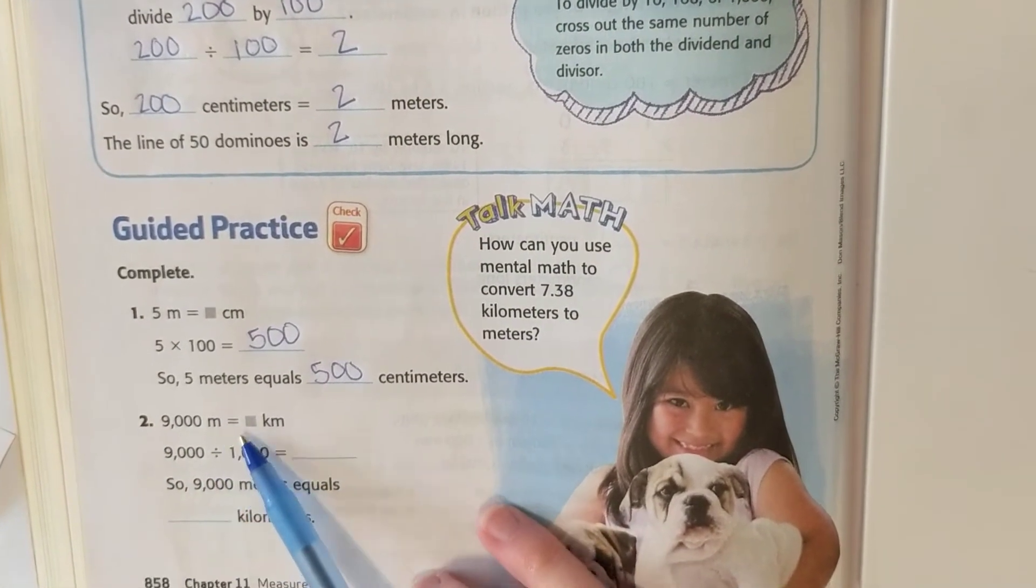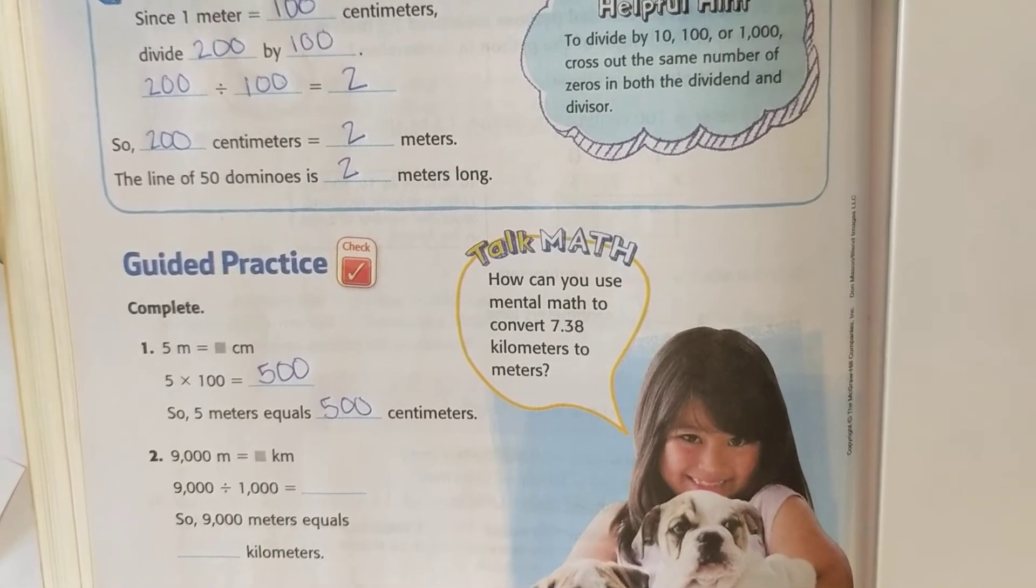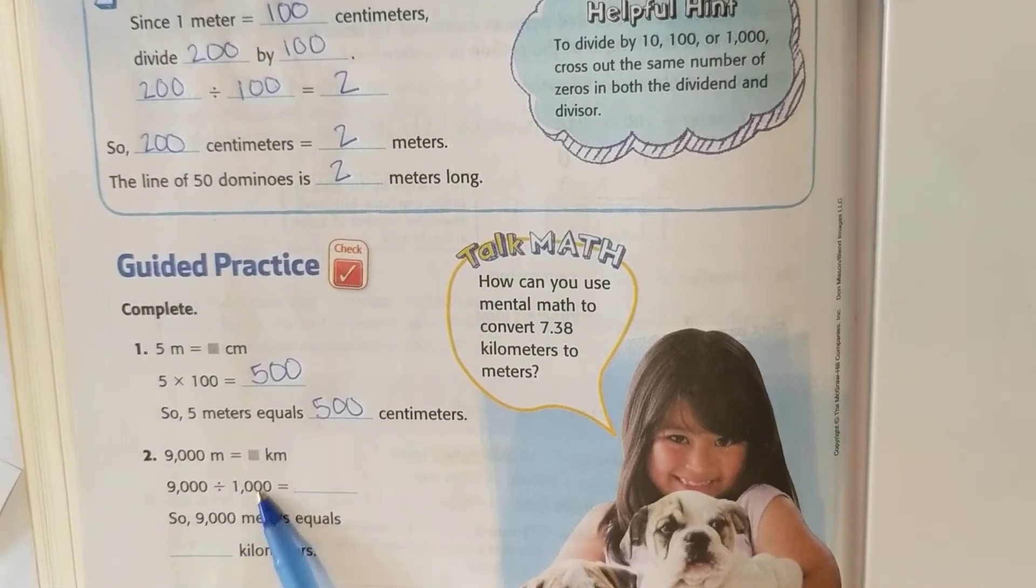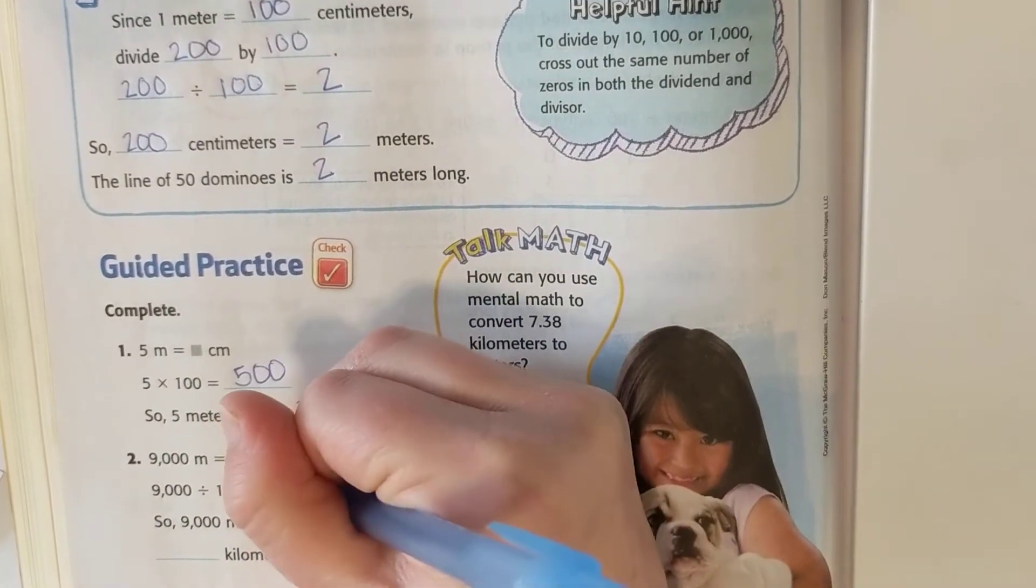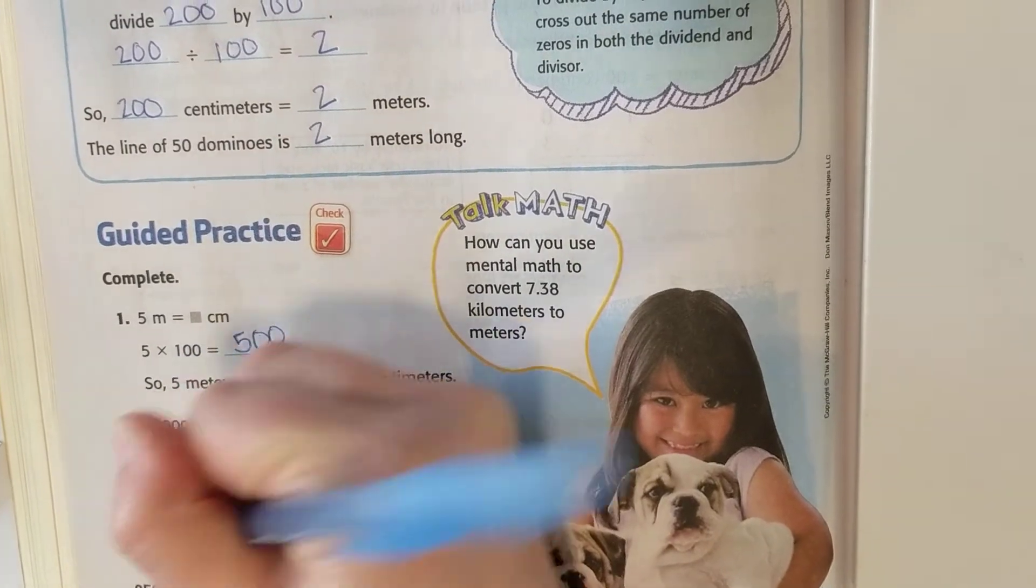9,000 meters, we're converting to kilometers. 9,000 divided by 1,000 because there's 1,000 meters in a kilometer and we're going to a bigger unit, so we've got to get smaller. 9,000 divided by 1,000 is 9. So 9,000 meters equals 9 kilometers.